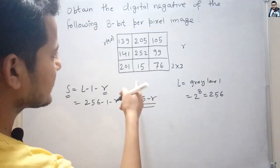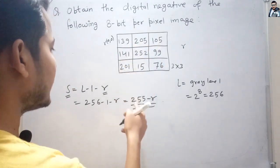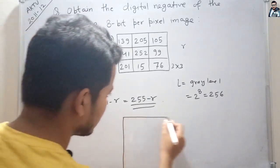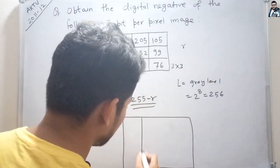So to obtain the digital negative, we subtract each pixel value from 255.